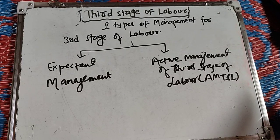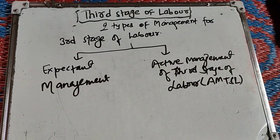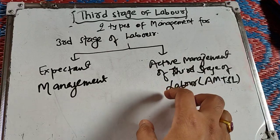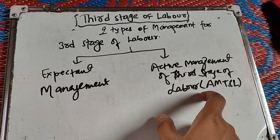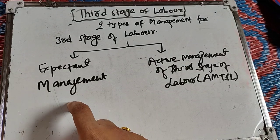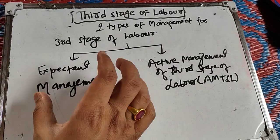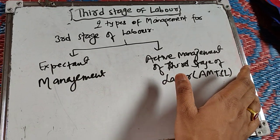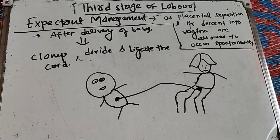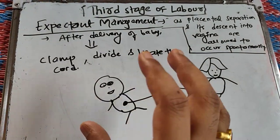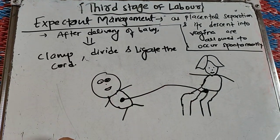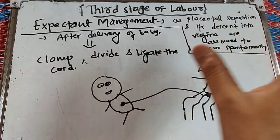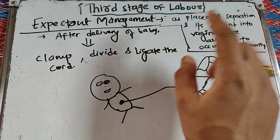There are two types of management for the third stage of labor: expectant management and active management of the third stage of labor, also abbreviated as AMTSL. In expectant management, there are very minimal interventions to be done. It is called expectant because the placental separation and its descent into the vagina are allowed to occur spontaneously.